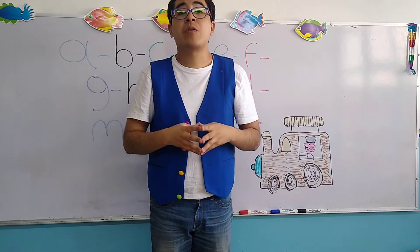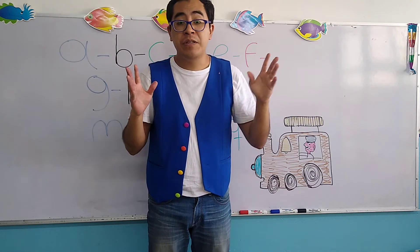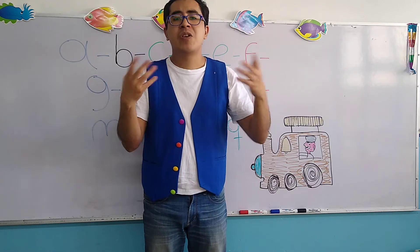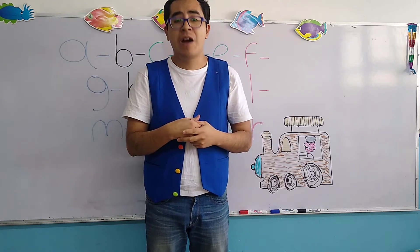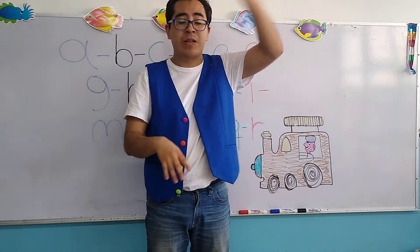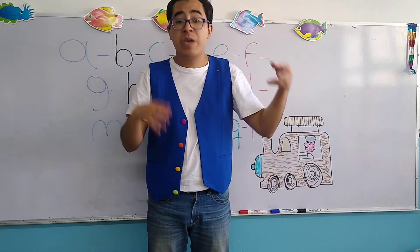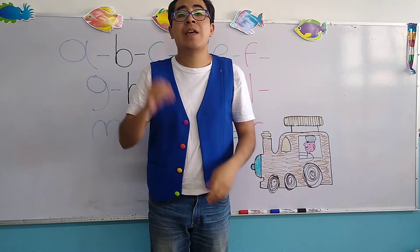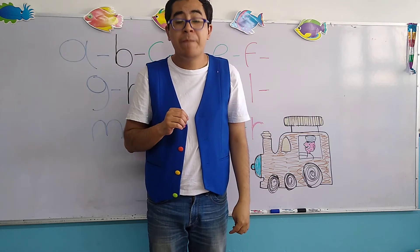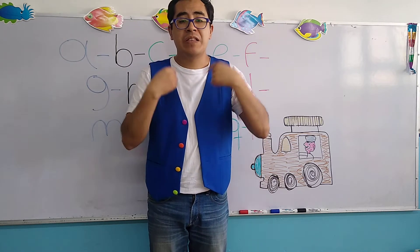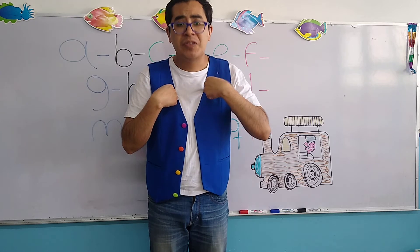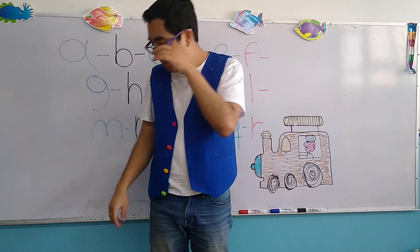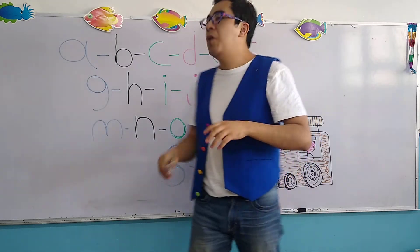Today we're going to continue with the letter T but in small form. And for this, we're going to have a review once again of all the previous letters, but because we're using small form, we're going to see names of people. Now remember, the teacher says it first and then you, my children, are going to repeat after me.